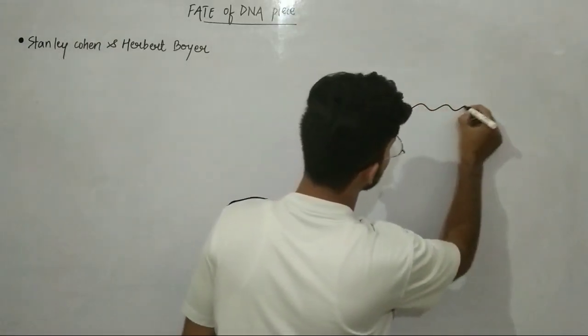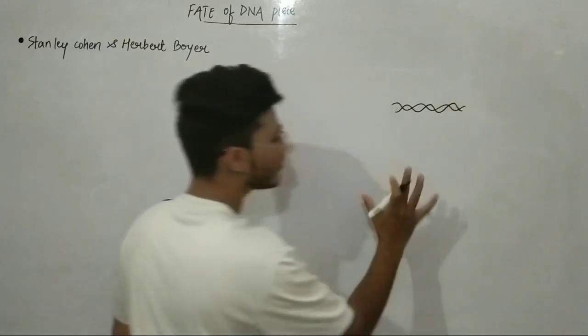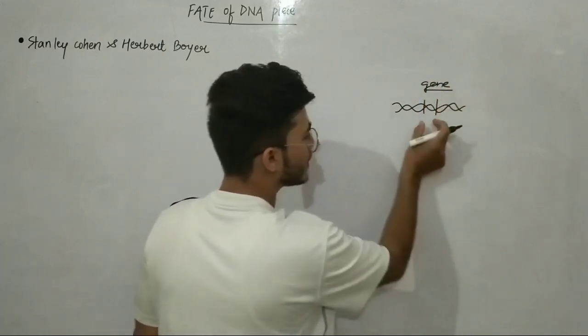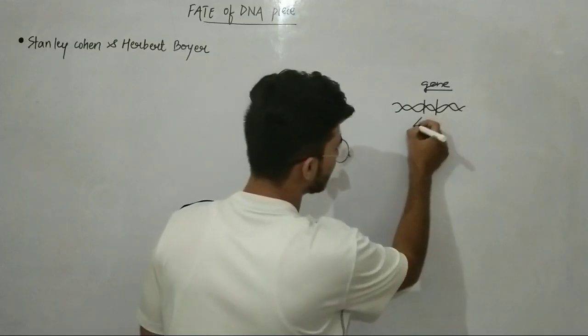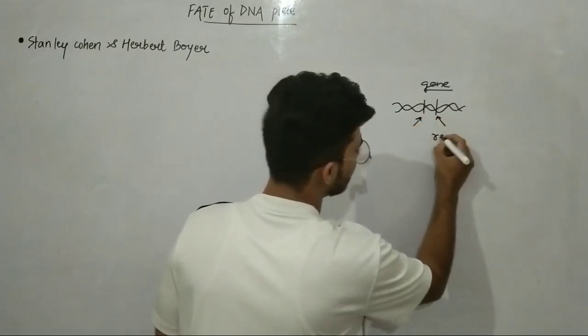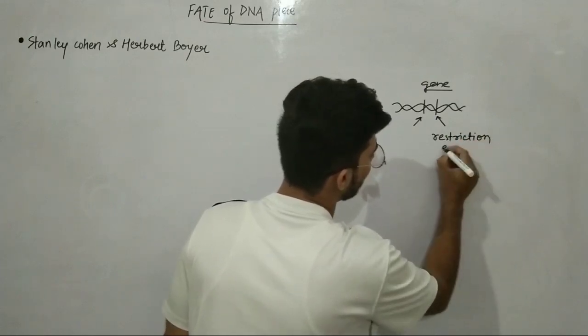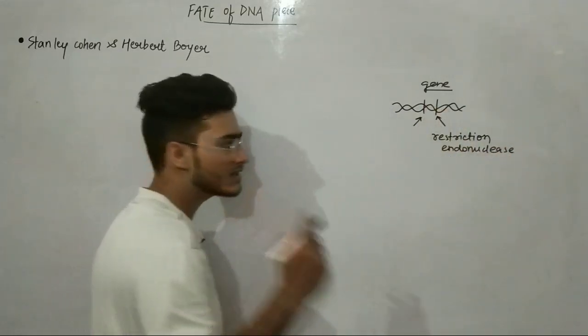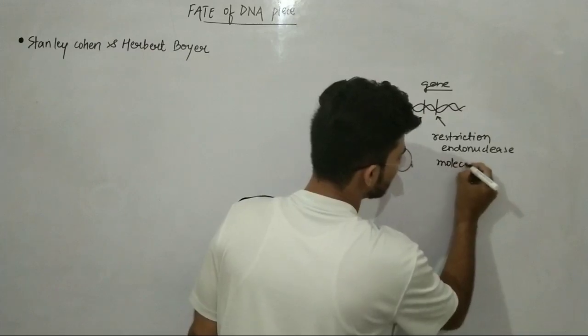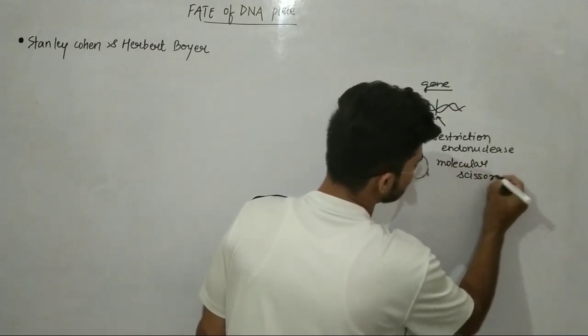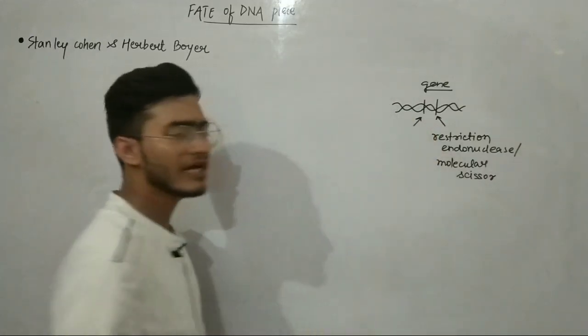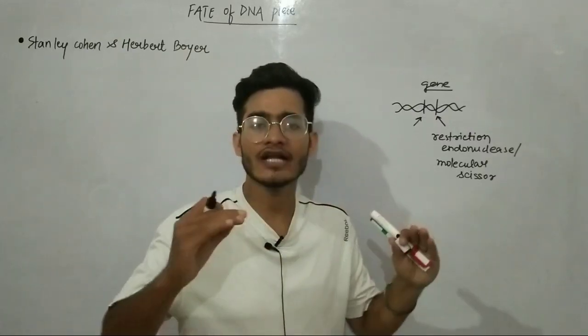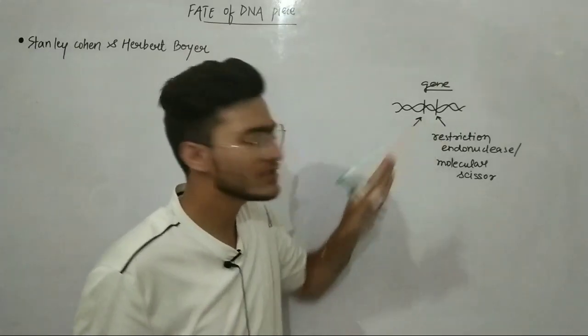We already talked about the basics of recombinant DNA technology. This gene piece, this is our gene of interest. This piece of DNA is firstly cleaved by the restriction endonuclease. It is called the molecular scissor which is used to cleave the DNA segments at specific palindromic sequences.